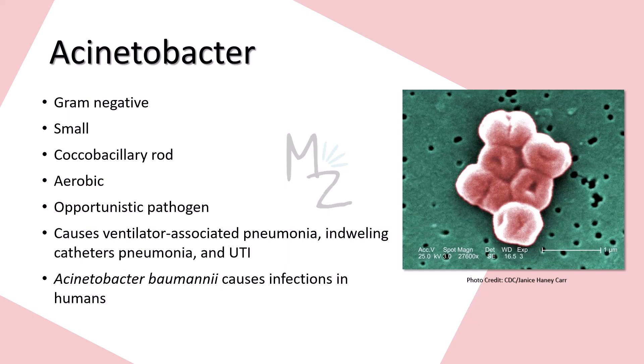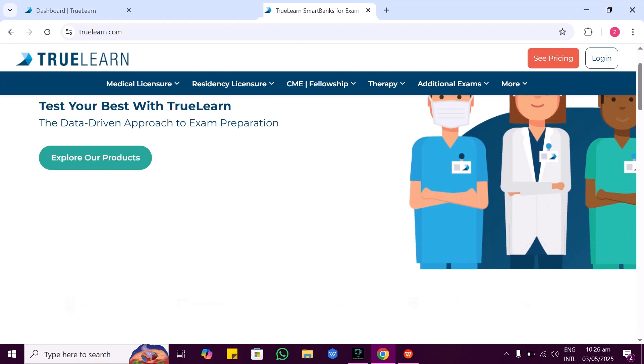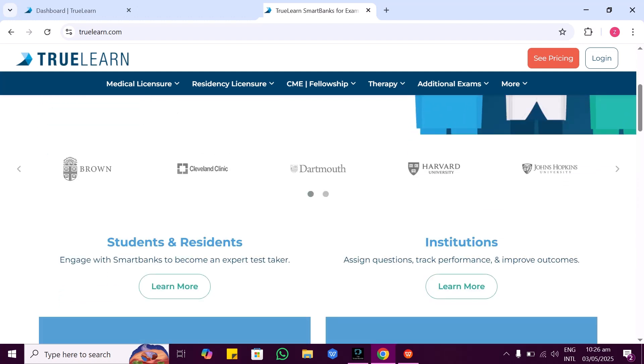Acinetobacter baumannii is the species that specifically causes infections in humans. Acinetobacter has many other species, but this one is specifically responsible for causing infections in human beings. This is how Acinetobacter looks under the microscope.